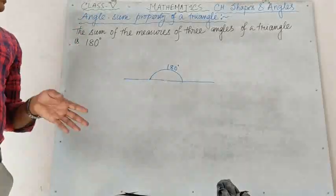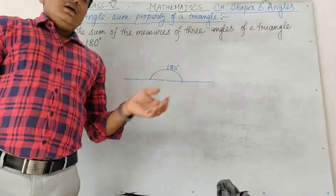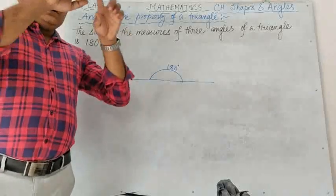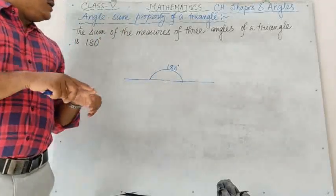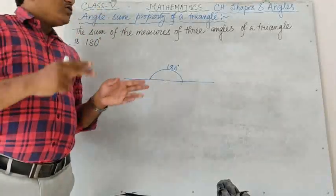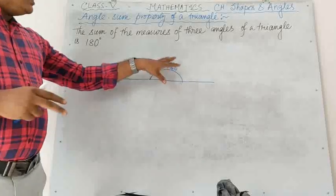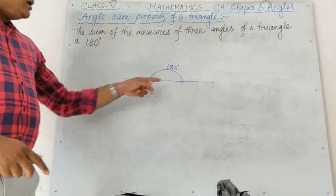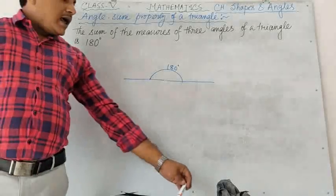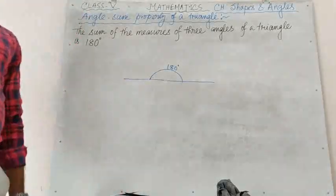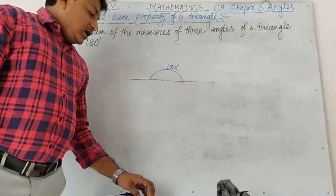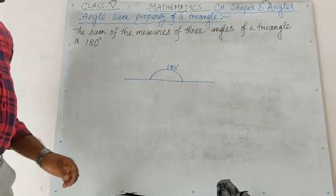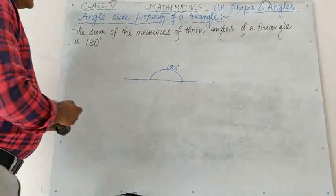The three angles together make a straight line. As we know, the angle of a straight line is 180 degree. So the sum of three angles of a triangle is 180 degree. Everyone can try and prove it at home — just take a triangle, cut its three angles, and by arranging them you will get a straight line, which equals 180 degree. This is the angle sum property of a triangle.